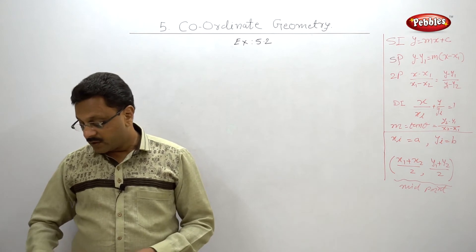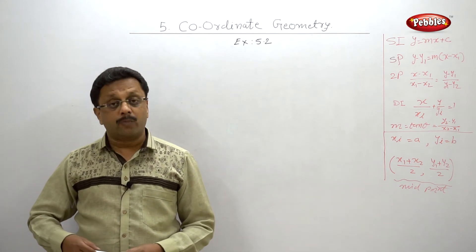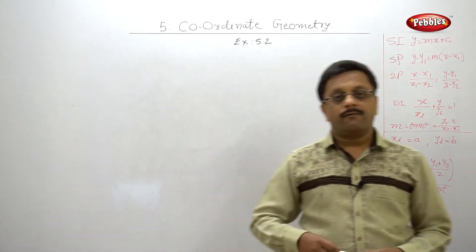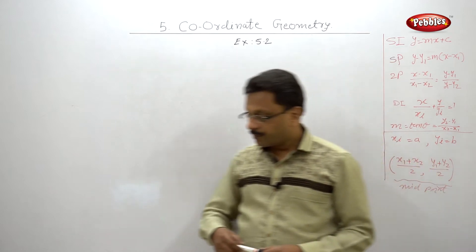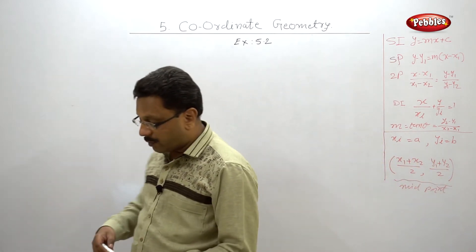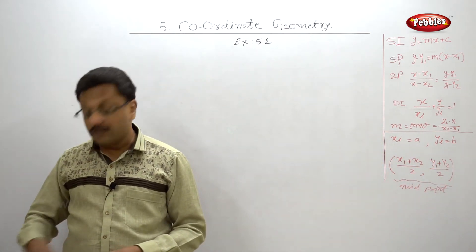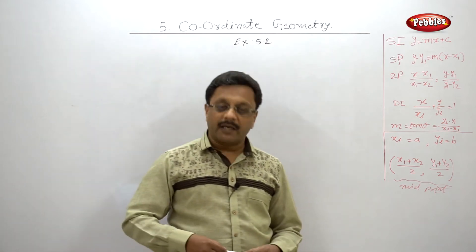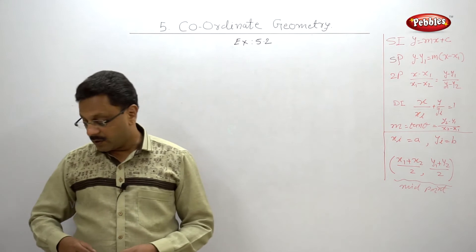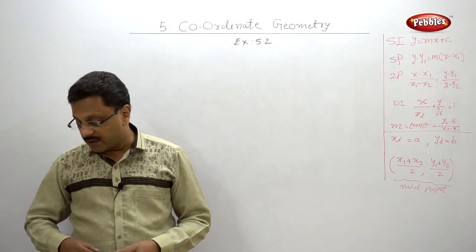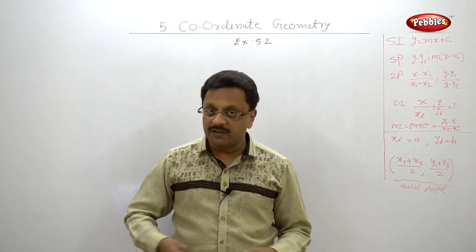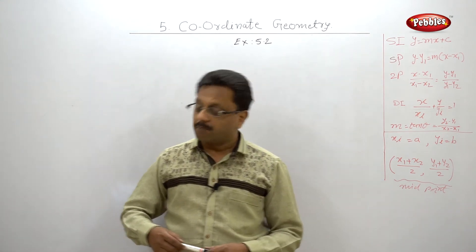Similarly, you can solve the second one. Y is equal to 2 by 3x plus 4. M is equal to 2 by 3 and y-intercept is 4. Third one is y is equal to minus 2x plus 3. This appeared in March 15 exam for one mark. Slope is minus 2 and y-intercept is 3. The next one is y is equal to minus 3x minus 5. Slope is minus 3 and y-intercept is minus 5.